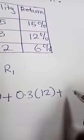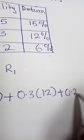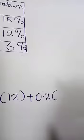For the second one plus 0.2 multiplied by 6% for the last one.